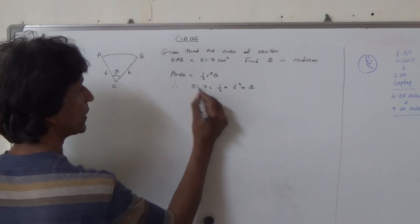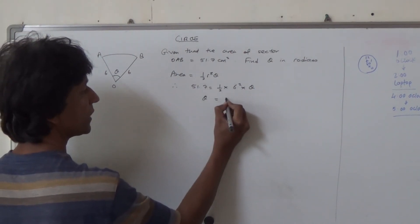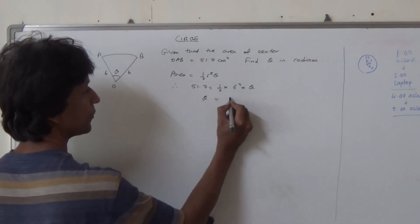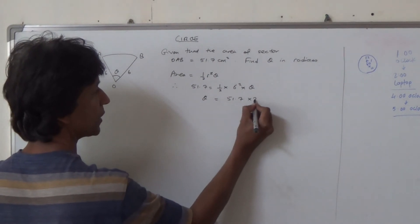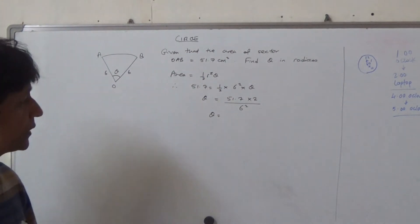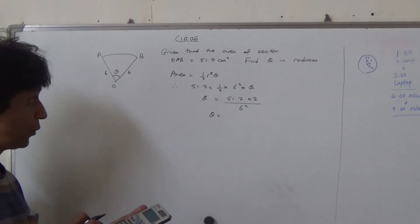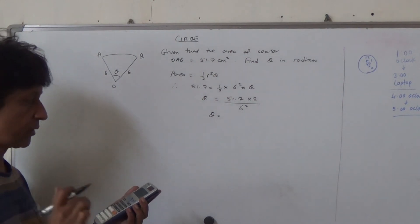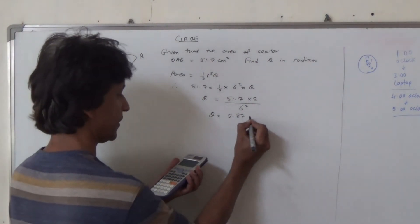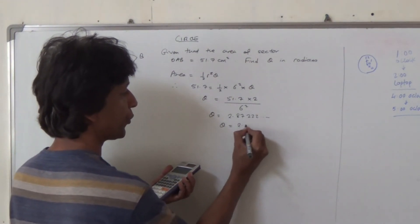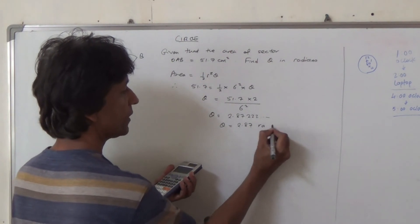Hence, theta is going to be equal to times 51.7 times 2 divided by 6 square. So, here we go. We can find theta now. And 51.7 times 2 divided by 36 should take us to 2.8722, and it goes on forever. So, I'm going to say theta is 2.87 radians.